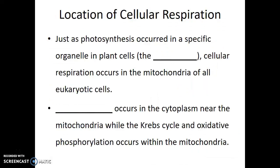Just as photosynthesis occurred in a specific organelle in plants — in that case the chloroplasts — cellular respiration occurs in the mitochondria of all eukaryotic cells. While only plants and certain protists photosynthesize, all eukaryotic cells have mitochondria and all eukaryotic cells perform cellular respiration, even plant cells.